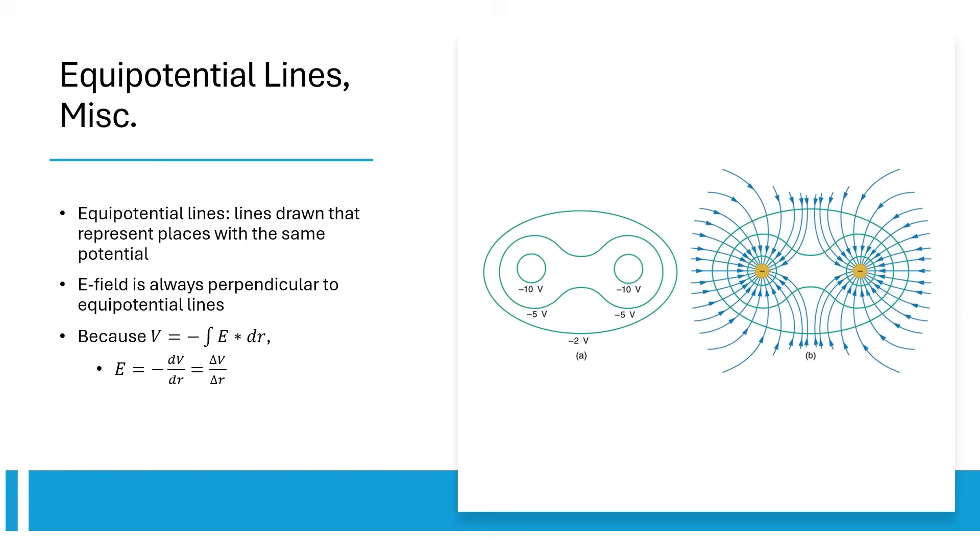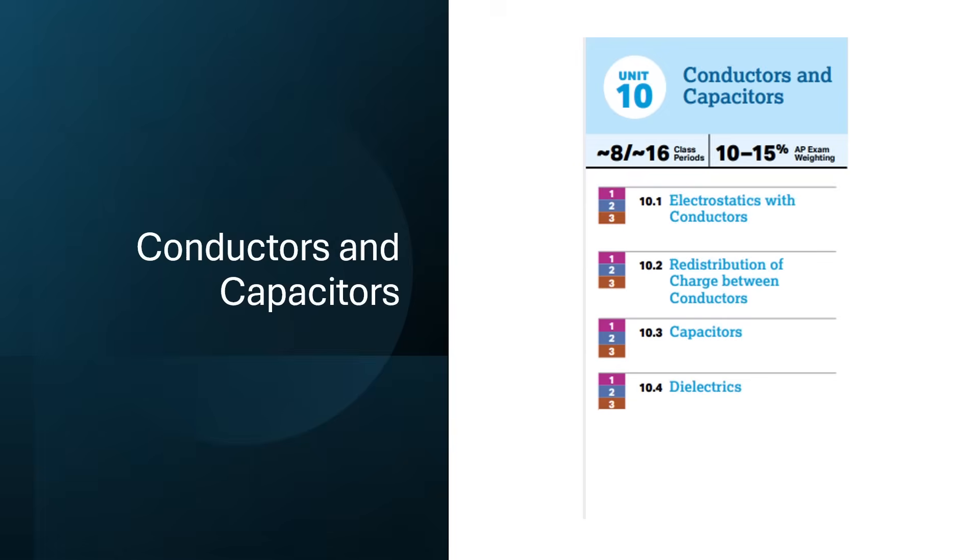We've talked about how to find electric potential using E-field, but it's also useful to find the E-field using electric potential. E-field is simply the negative derivative of electric potential with respect to displacement. If E-field is constant, you don't have to use a derivative, you can just divide change in V by change in R.